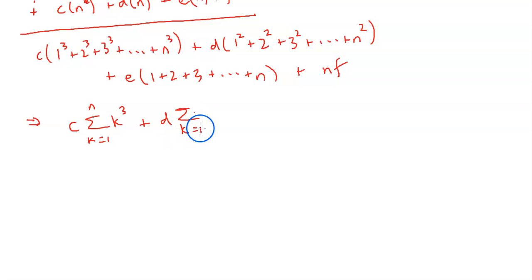plus e times the sum from k equals 1 to n of just k and then lastly plus n times f.